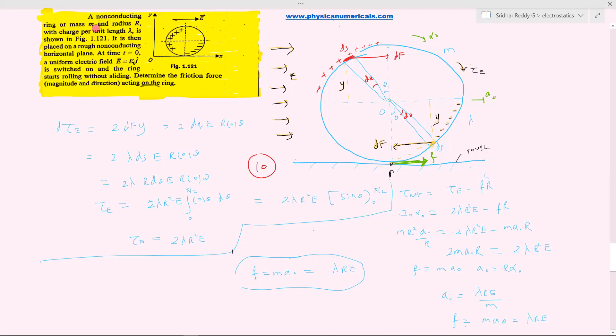A non-conducting ring of mass M and radius R with charge per unit length lambda is as shown. There's a charge present only in this region. In this quarter positive charge, and here a negative charge is present.